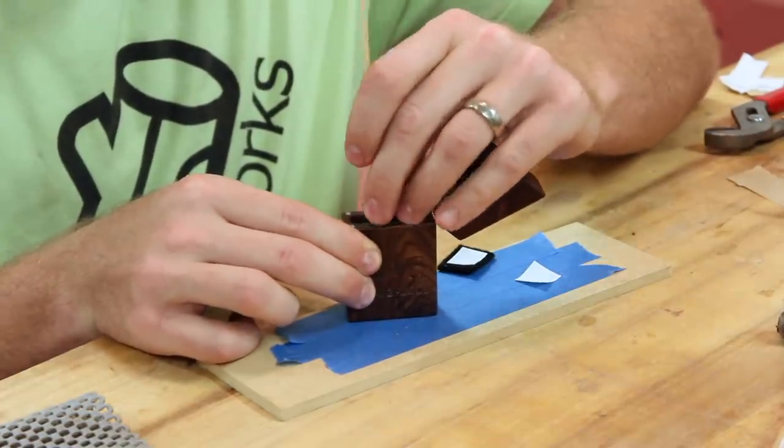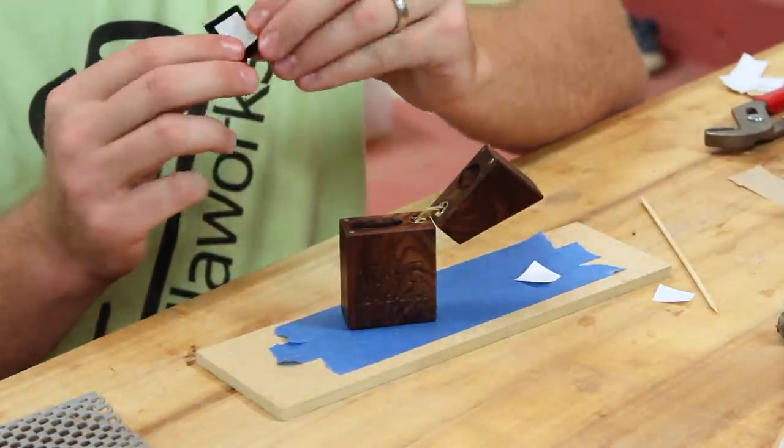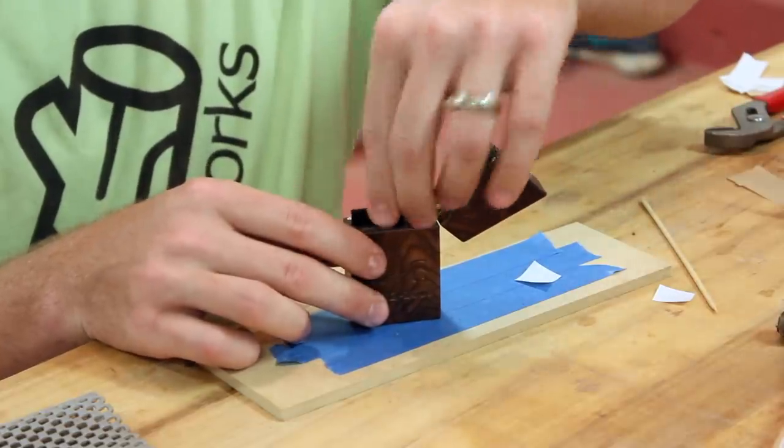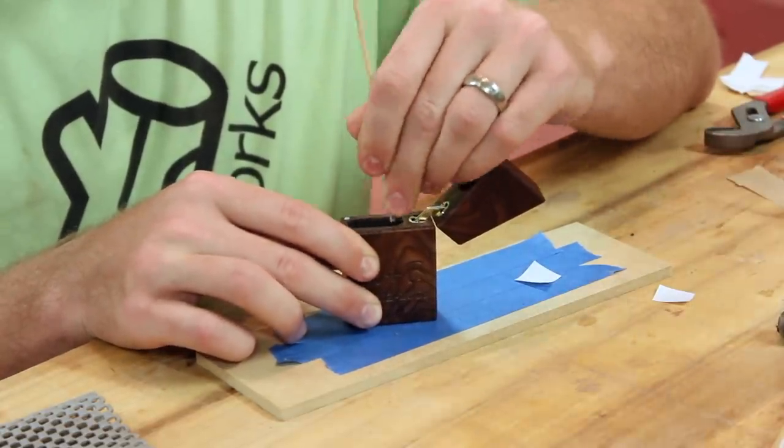The last step of this project is to add a felt liner. This is just going to hold the ring snug and protect it from the wood. I'm just using black felt and double-sided tape.